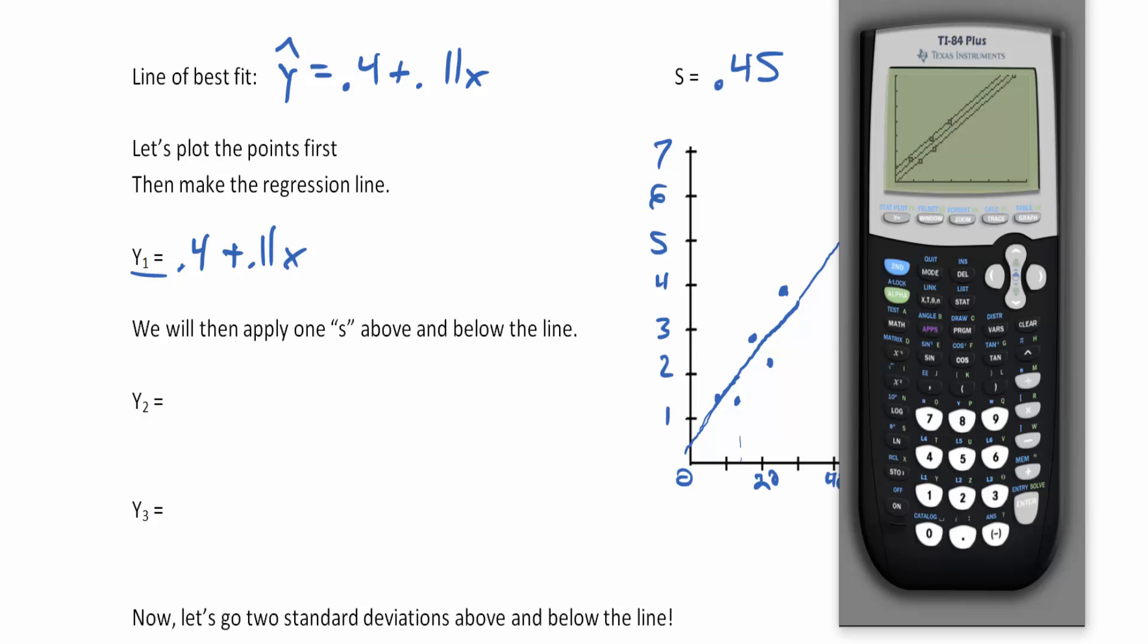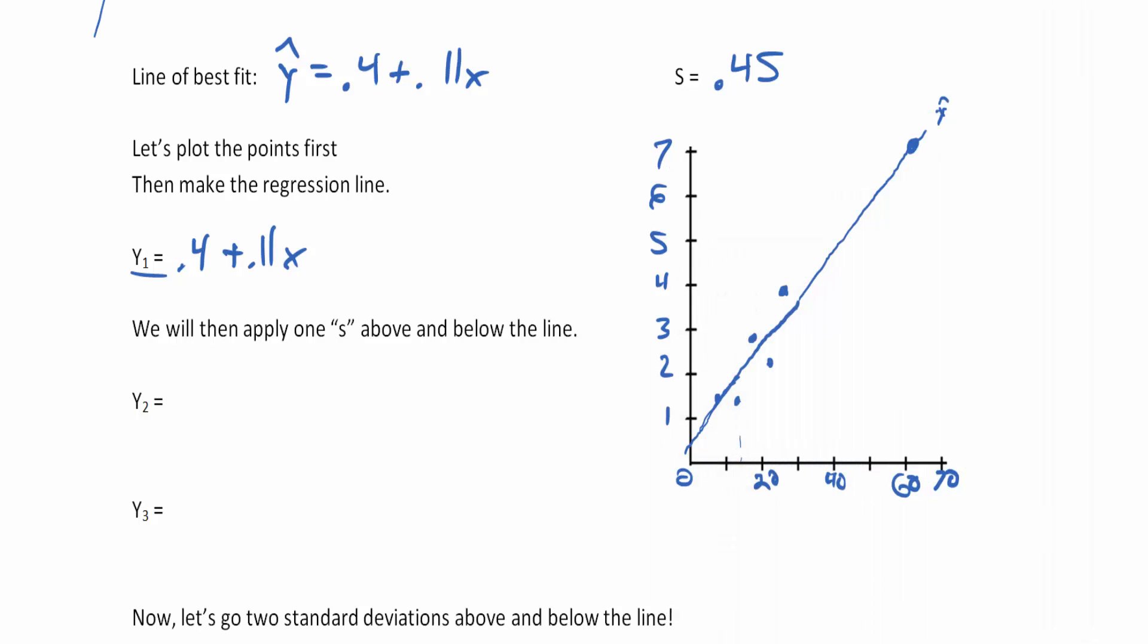This is going to give me two more lines that are parallel to the line of best fit. I'm going to use a different color for this: 0.4 plus 0.11x plus 0.45, and 0.4 plus 0.11x minus 0.45.